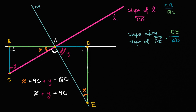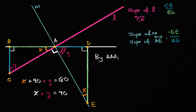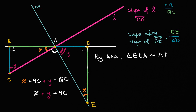So we have now established that triangle ABC and triangle EDA have all corresponding interior angles equal — they both have an angle of measure X, they both have an angle of measure Y, and they are both right triangles. So by angle-angle-angle, one of our similarity postulates, we know that triangle EDA is similar to triangle ABC. That tells us the ratio of corresponding sides are going to be the same.